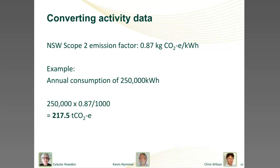If you want to look at other activities, they might be a bit more difficult to estimate because sources for emission factors are less readily available. The NGA factors cover things like electricity, gas, fuel, waste, and refrigerants. But if you want to go beyond that and look at paper use, water consumption, flights, or the embodied emissions in equipment and materials, it gets a bit harder.